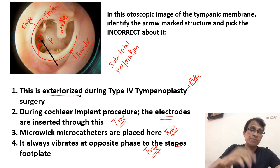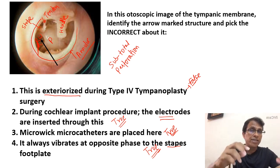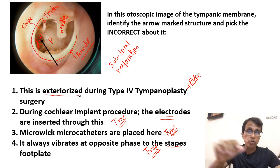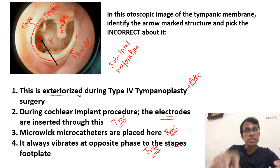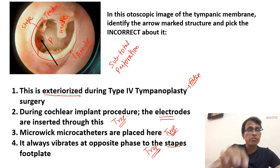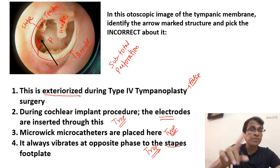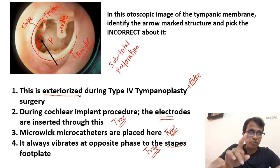The first choice is a false statement and therefore the correct answer, since you must pick the false statement. 'Exteriorized' means exposed to the exterior environment. In type 4 tympanoplasty, we cover the round window with a temporalis fascia graft and the oval window is exposed — so the oval window is exteriorized in type 4, not the round window. In type 6 tympanoplasty, the reverse happens: we cover the oval window and the round window is exteriorized. So exteriorization of the round window is true for type 6, not type 4.